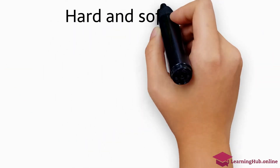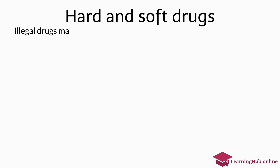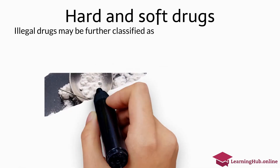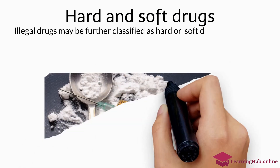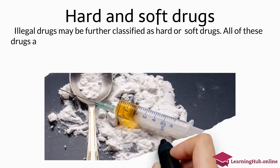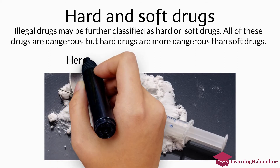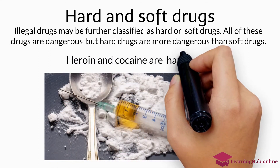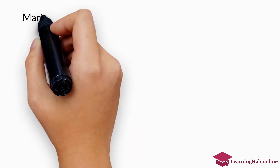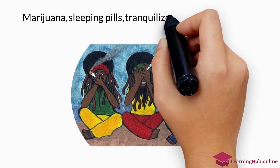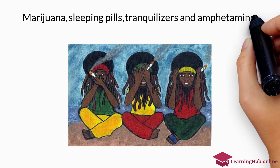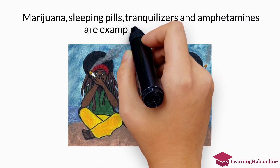Hard and soft drugs. Illegal drugs may be further classified as hard or soft drugs. All of these drugs are dangerous, but hard drugs are more dangerous than soft drugs. Heroin and cocaine are hard drugs. Marijuana, sleeping pills, tranquilizers, and amphetamines are examples of soft drugs.